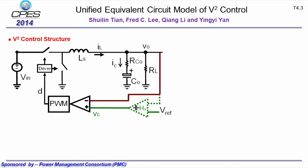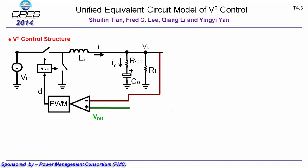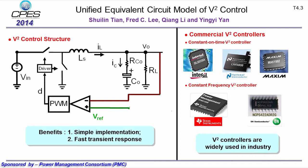In many applications, the outer-loop integrator can also be saved, which is called ripple-based control. This structure is very simple and provides very fast transient response. It is widely used in industry — many products employ constant on-time V-square control or constant frequency V-square control schemes.